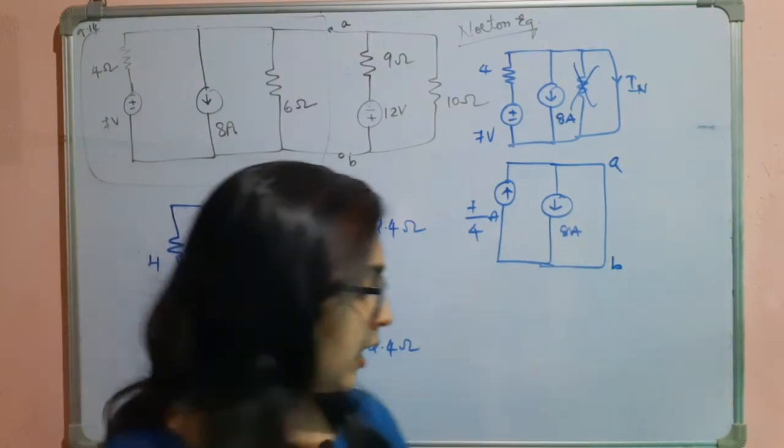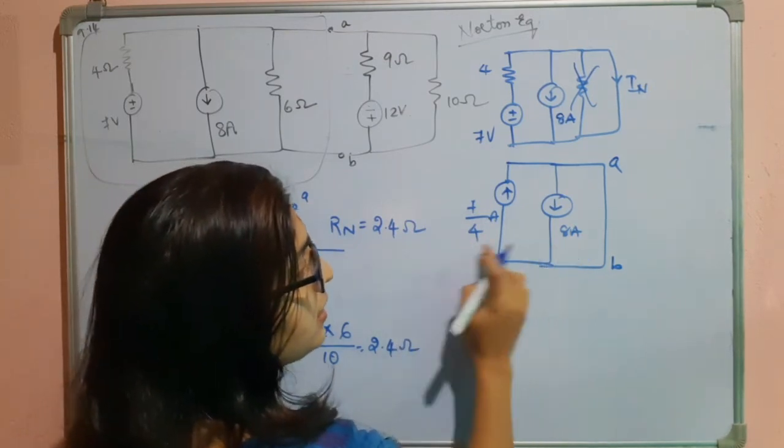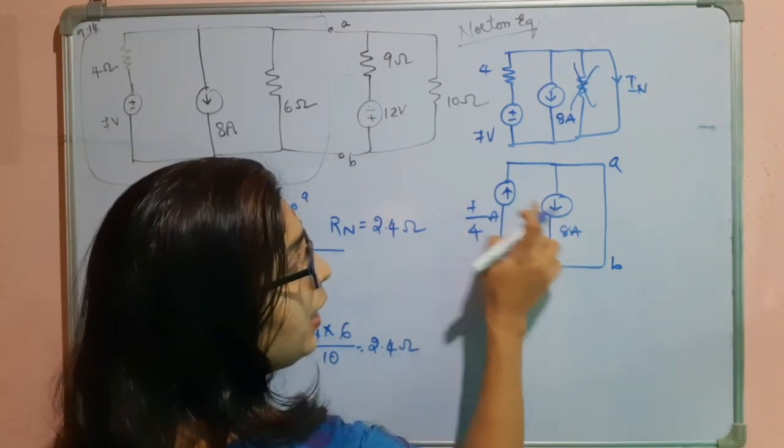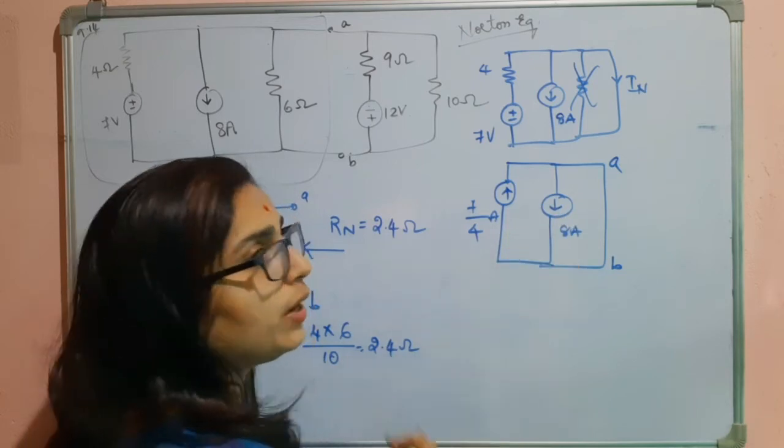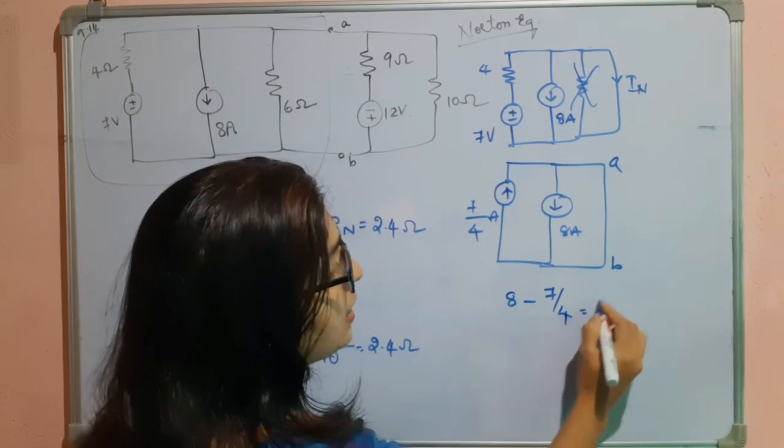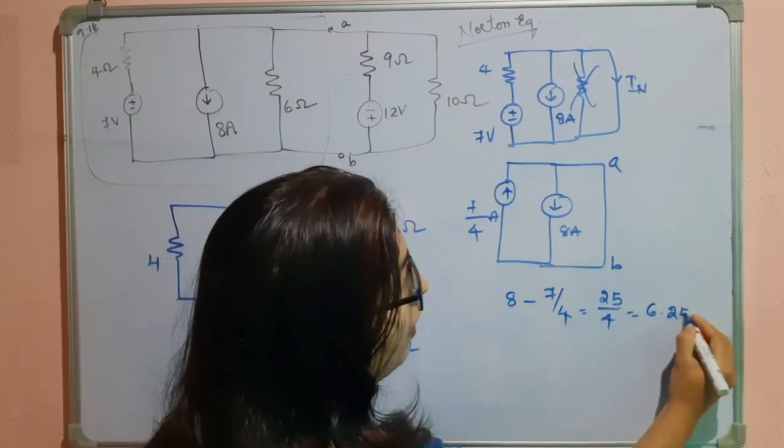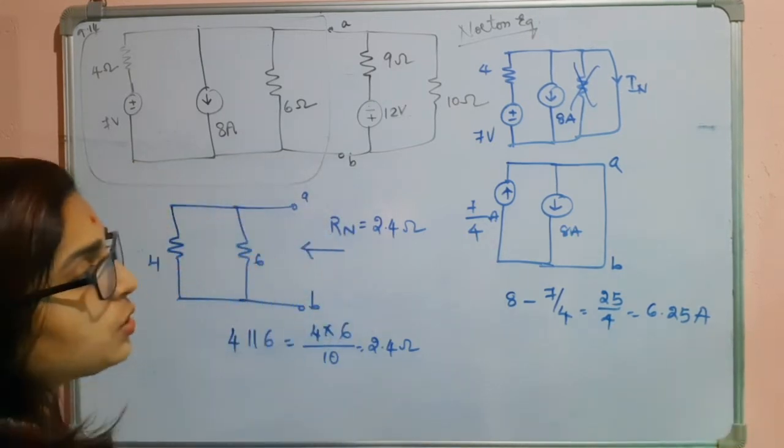We will see in which direction the current flows here through the shorted path. See, the magnitude of this is greater than this. You know they are in opposite directions, so we have to take the difference for the resultant. So 8 minus 7 by 4, that is 25 by 4, which is nothing but 6.25 amperes. So that is the current.